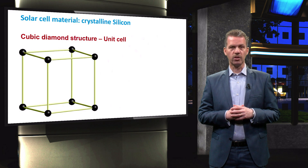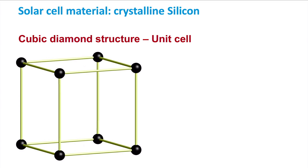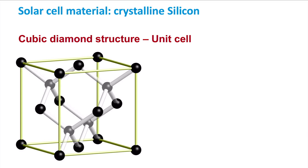The crystal structure of crystalline silicon is cubic diamond. This diamond structure is described as a face-centred cubic lattice, which is a cubic lattice with atoms placed at the centre of each face as shown here. The cubic diamond structure has 4 more atoms in the unit cell.